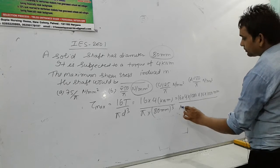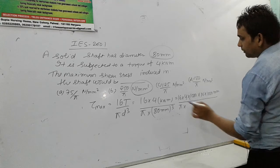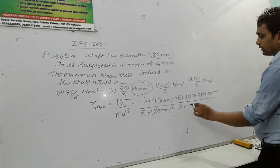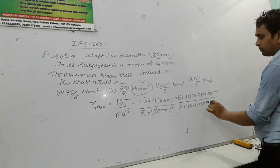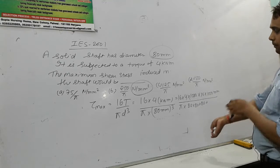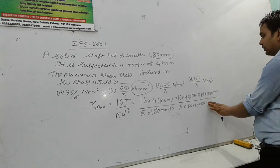Divide by π. 80 mm cube, so 80 into 80 into 80. Already it is in Nm, so no need to convert.